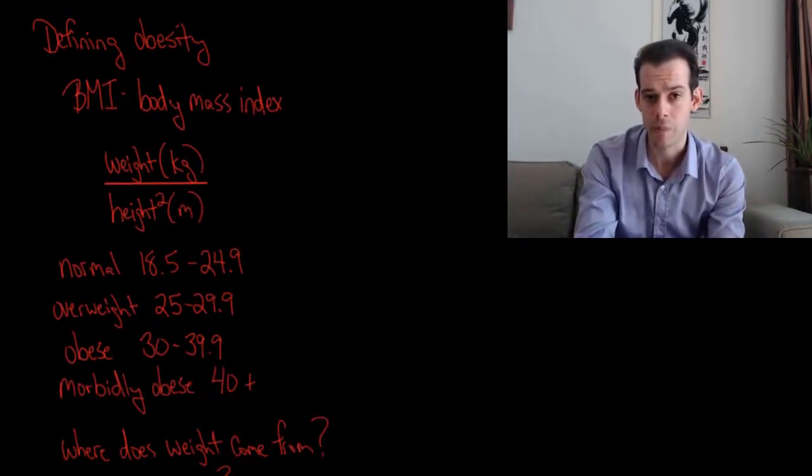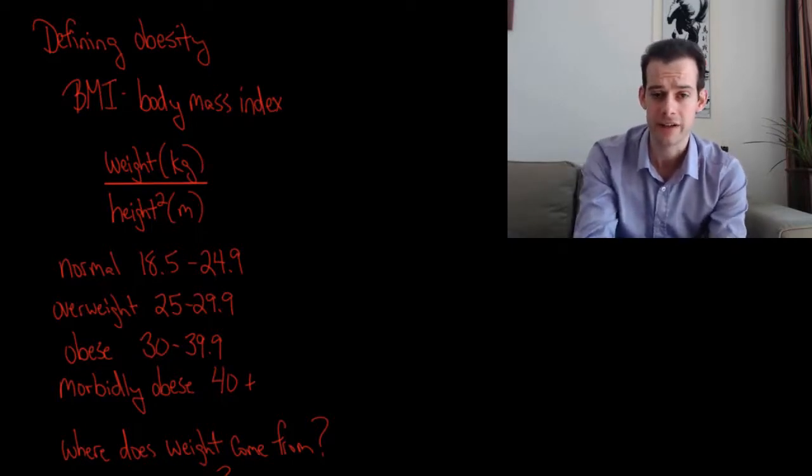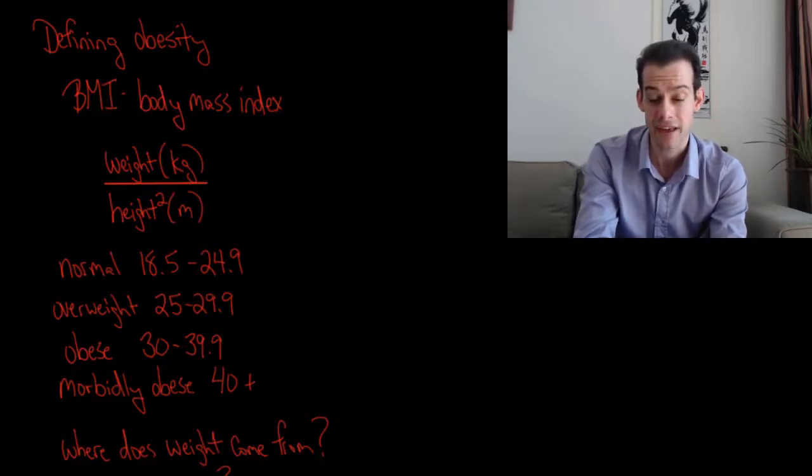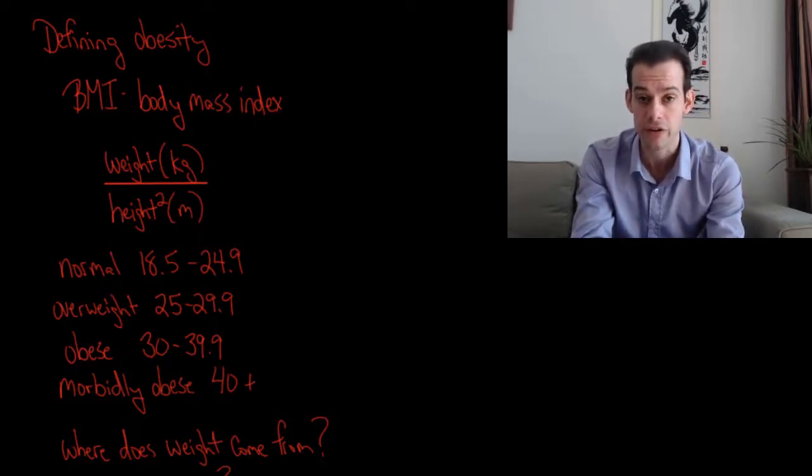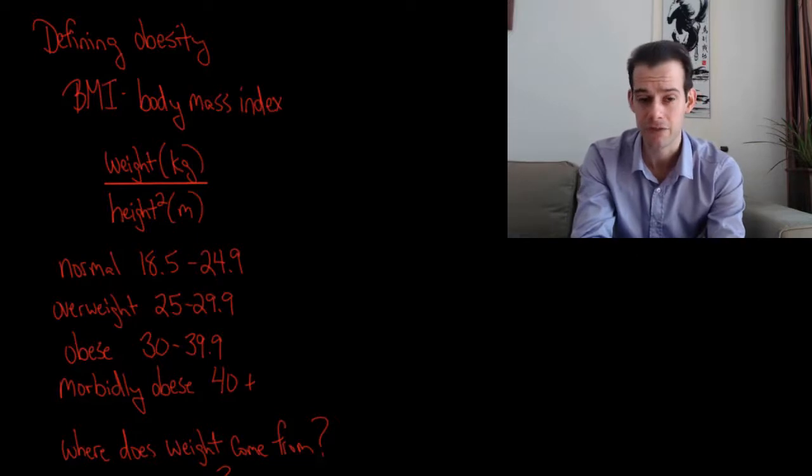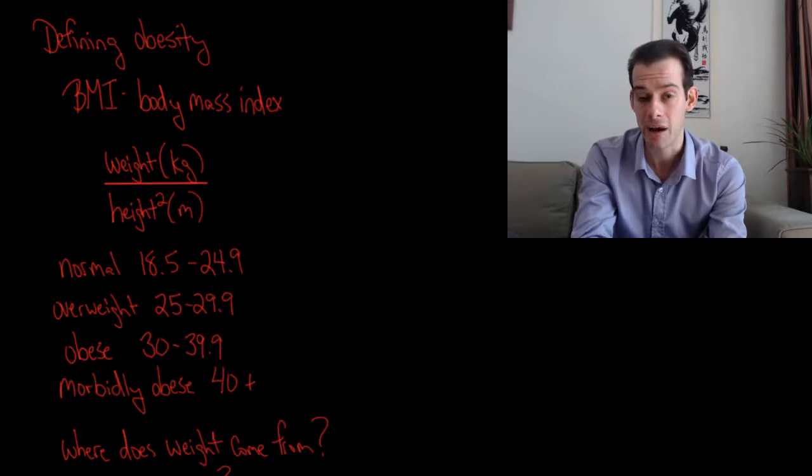But let's get back to the topic of obesity. So what exactly do we mean when we talk about obesity? How do we define it? The main way of defining obesity is to use a calculation called BMI or body mass index. It's actually a very simple calculation. All you need to know is your weight and your height. Your BMI is your weight in kilograms divided by your height in meters squared.